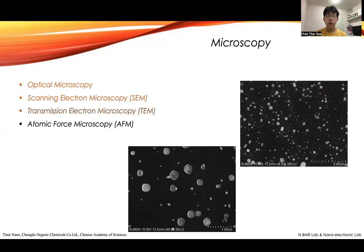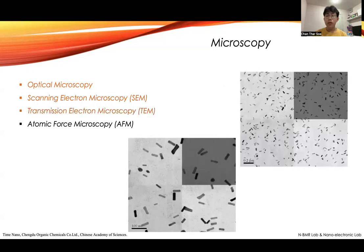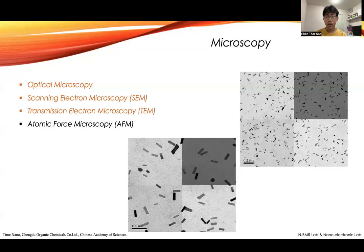The next one is the transmission electron microscope. This is an image of the nanoparticle that I synthesized in my research. The difference between the scanning electron microscope and the transmission electron microscope is that they use the same electrons to reach the surface to characterize, but in TEM, the electrons transmit into the material so we can see it in 3D formations. That is the difference between SEM and TEM.